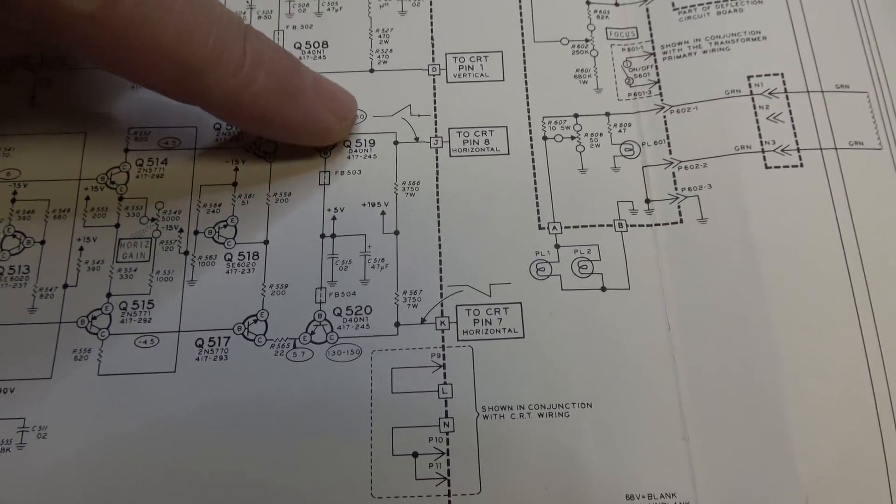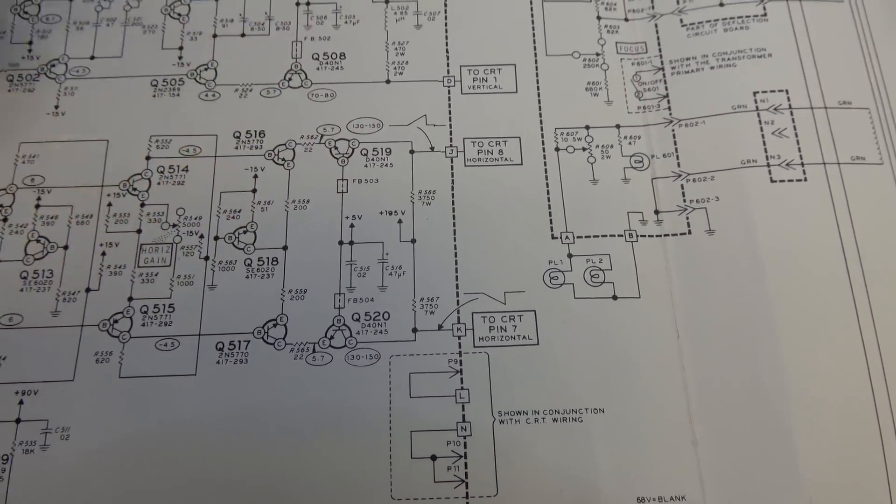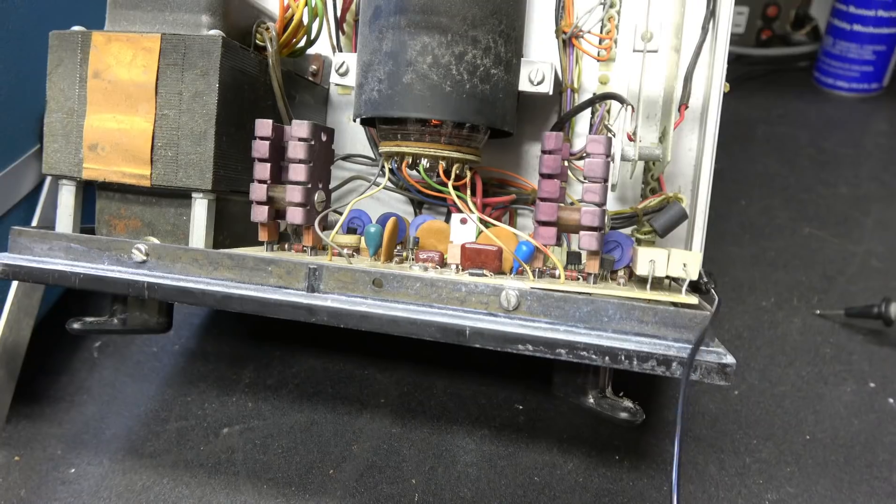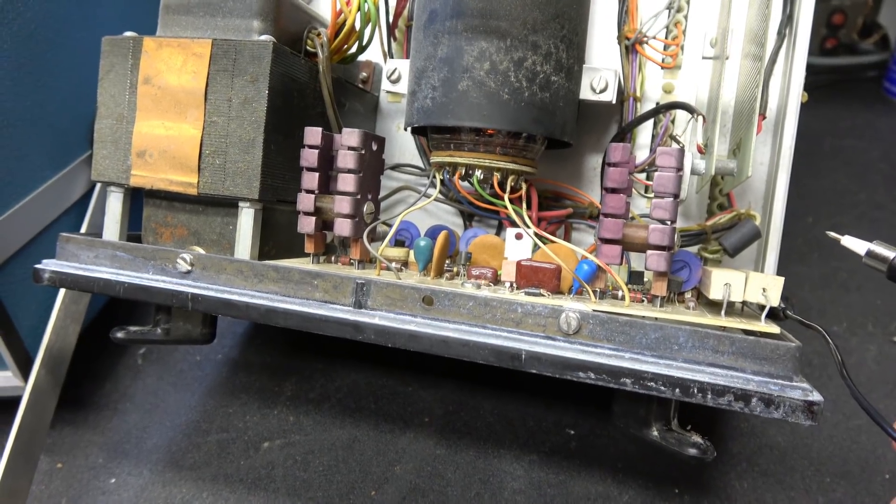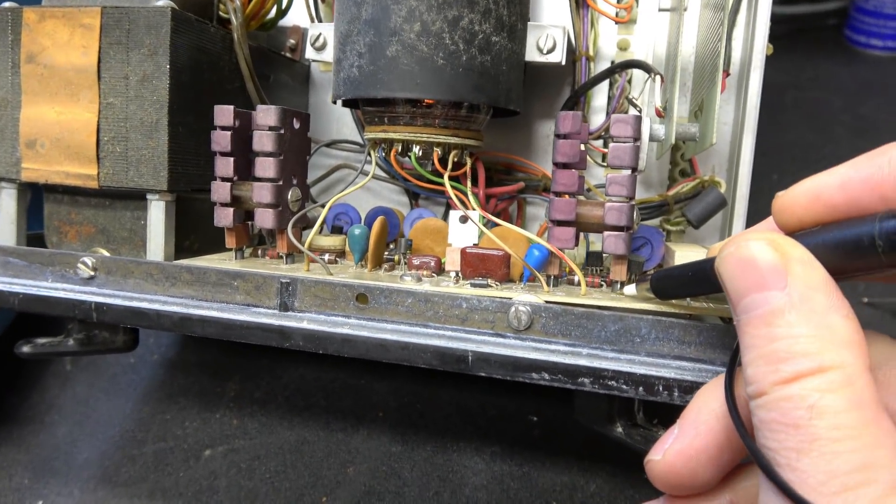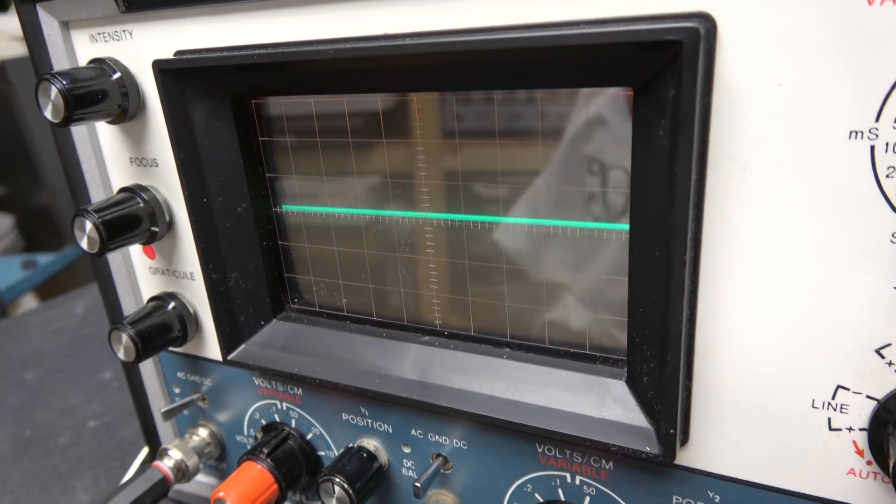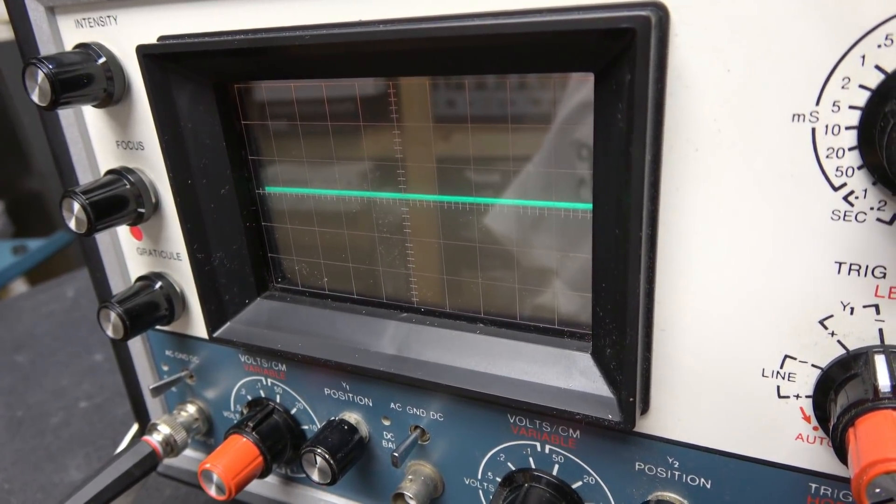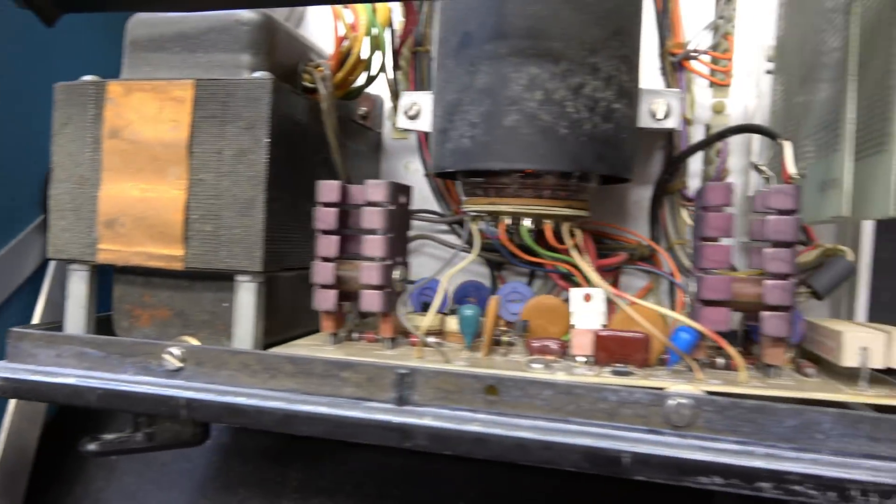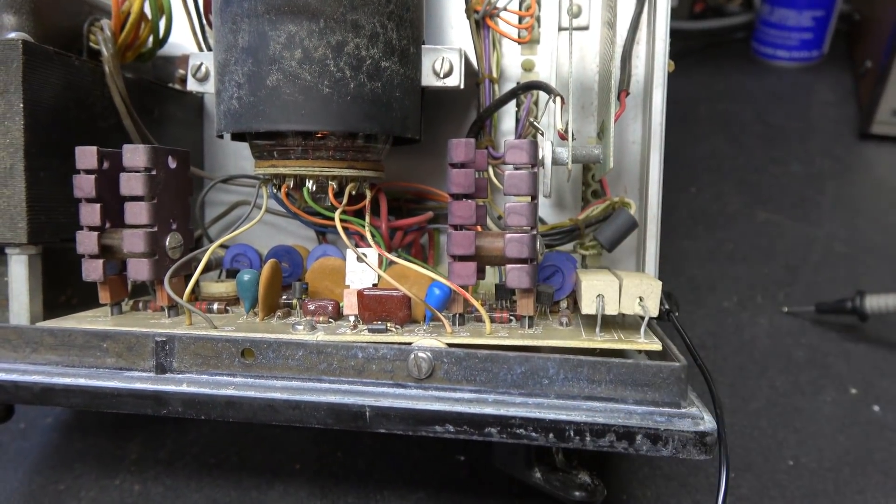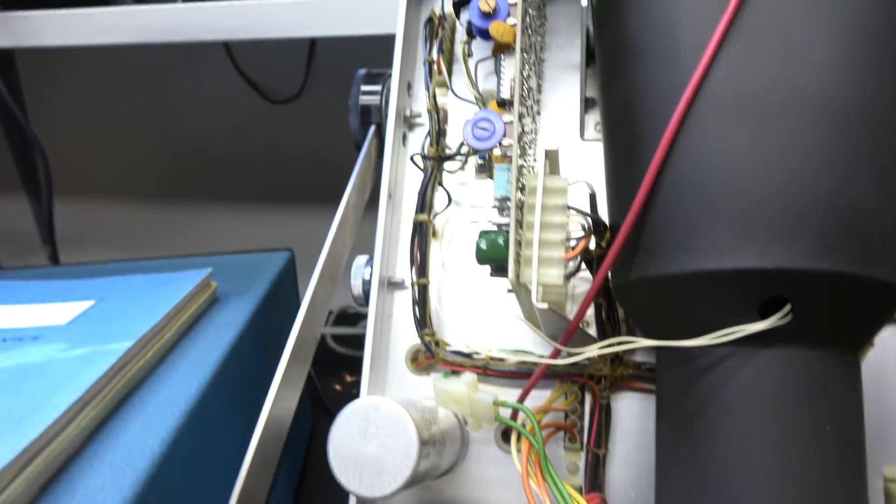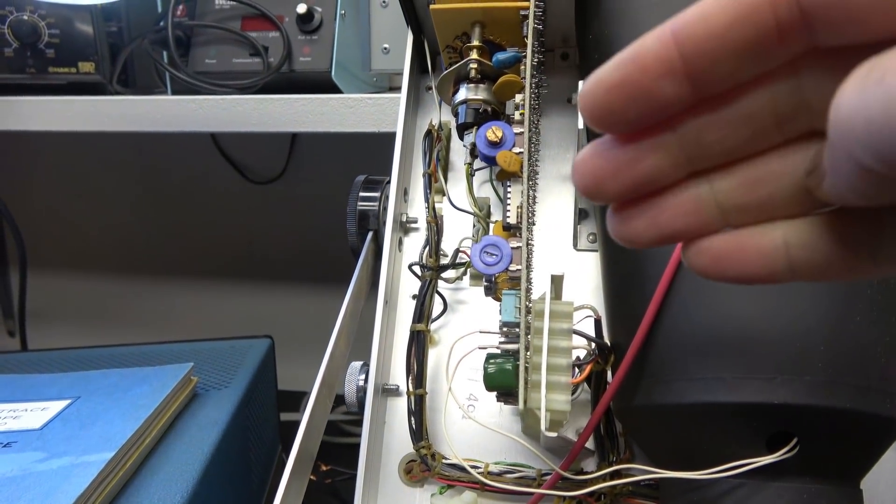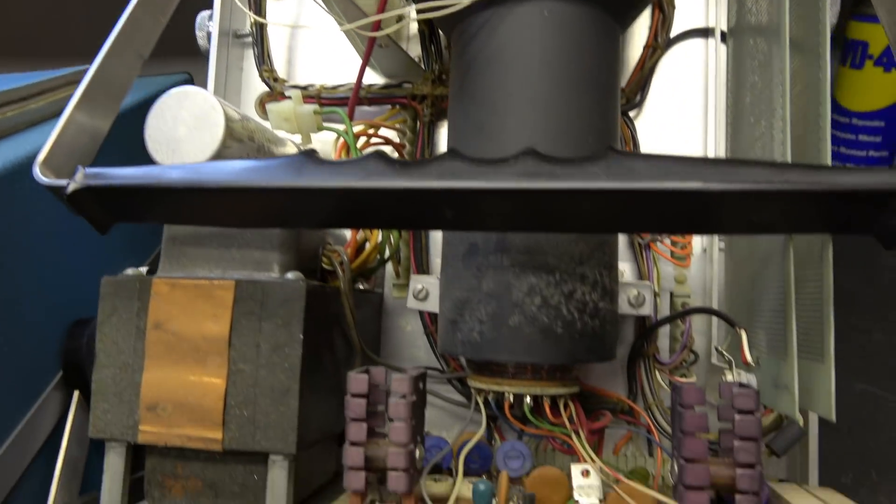Next thing, let's get a scope in here. We'll take a look and see what we have here for the signal. And if it's not there, we'll work our way back. So I've got my scope set up, actually the working scope is set up. We're gonna go to the collector of this output device and what do we got? Nothing. All right, so obviously we have no output from the collectors of these transistors, and that's why they're cool as a cucumber.